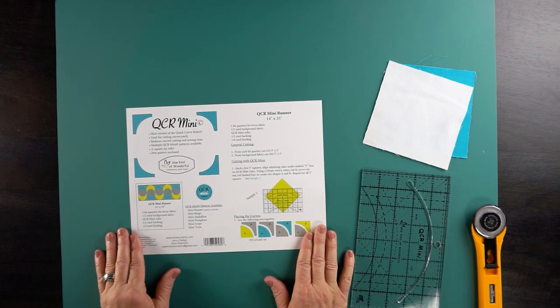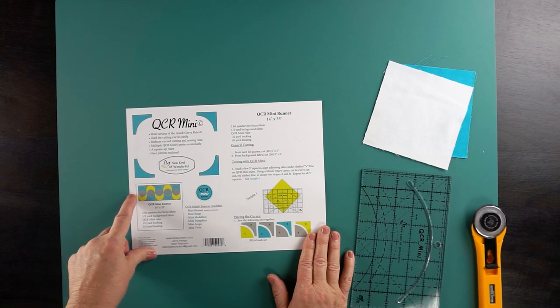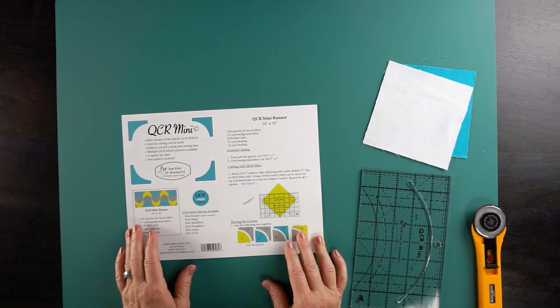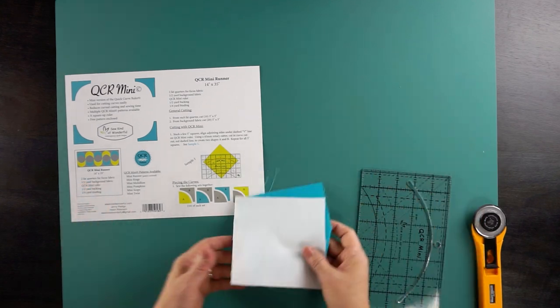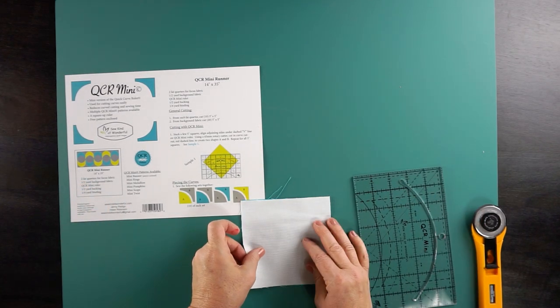Here's our QCR Mini insert that comes when you buy the ruler. On it, we have the fabric requirements here for the Little Runner, and then we walk you through the steps. We start with five inch squares. This is a great one if you want to use charm packs. Here I just have some solid fabric.